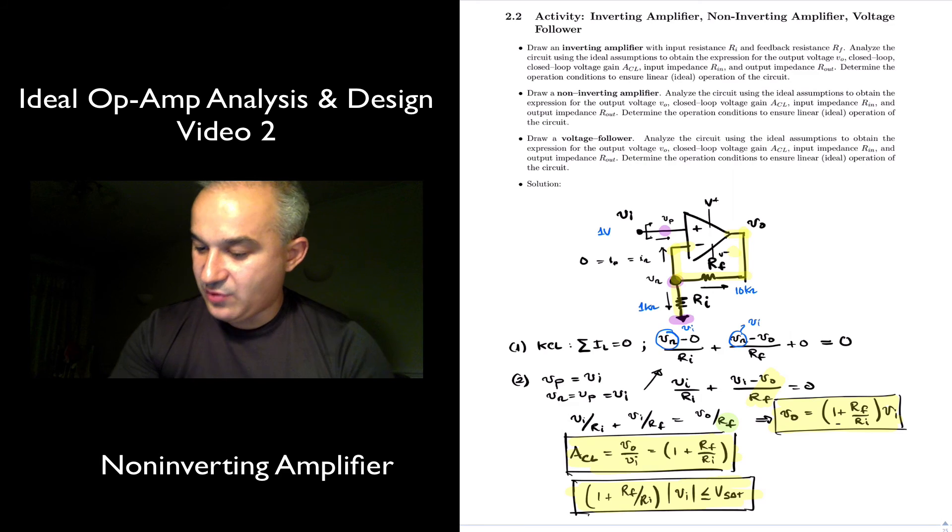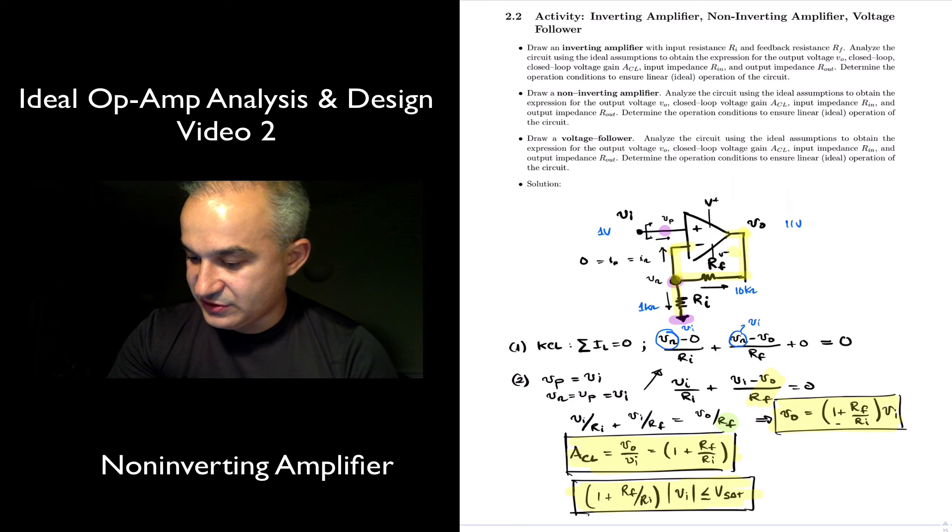Let's consider here an example. Same example as we did before in the previous problem. If we put a 10k and a 1k here, what is our gain going to be? This gives us 11. So if our input is 1 volt, our output is going to be 11 volts. In phase, in this case.